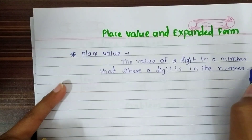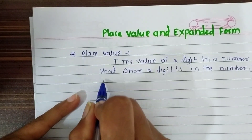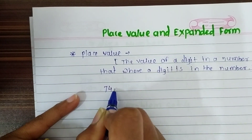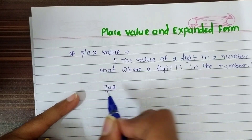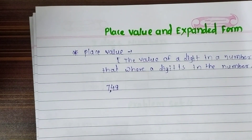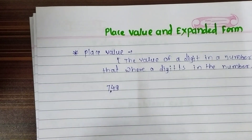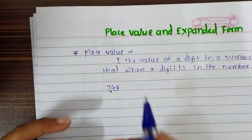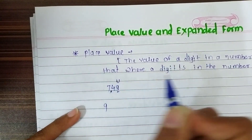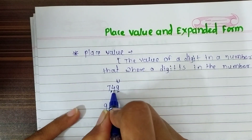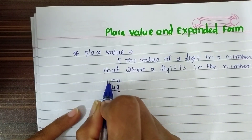It is very easy. I take here one example: 749. To find out the place value of a digit, we must know in which place the digit is. For example, 9 is in the unit place, 4 is in the 10th place, and 7 is in the 100th place.